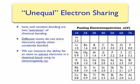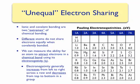Electronegativity is the ability for an atom to attract electrons in a chemical bond. The table on the right shows the electronegativities as calculated by Linus Pauling for main group elements. Examining the trends, electronegativity generally increases from left to right across a row, which can be explained by the increase in effective nuclear charge. This increase allows atoms to pull more electron density toward them when participating in chemical bonds.